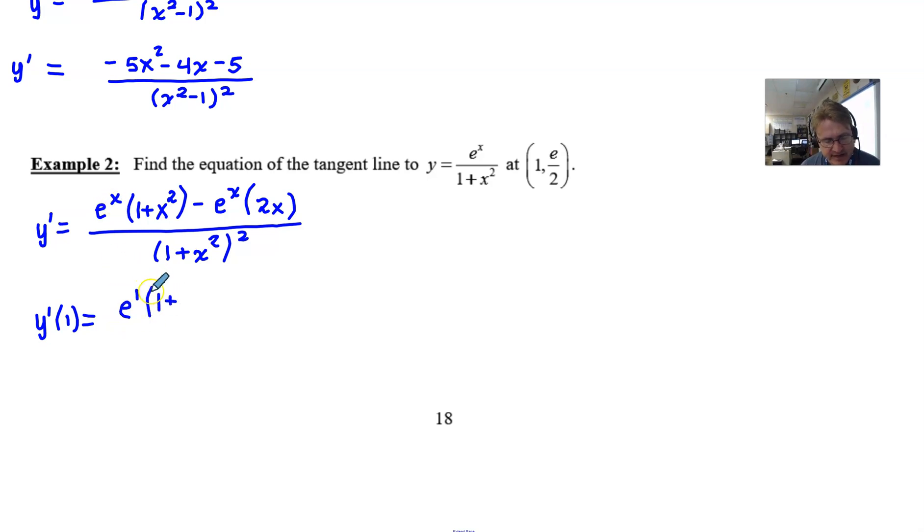So we have e^1 times (1 plus 1 squared). We know that 1 squared is 1, so I'll do away with writing that squared. And then another e^1, and then 2 times 1, of course, is 2. And then the denominator of this guy is going to be (1 plus 1 squared), which is going to be 2, and then that's going to be squared. And I'm sure you just heard our bell ring.